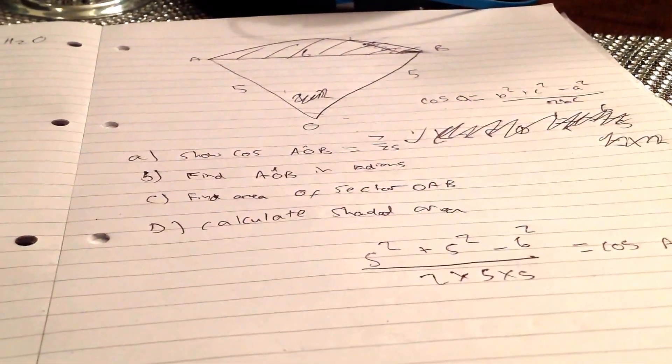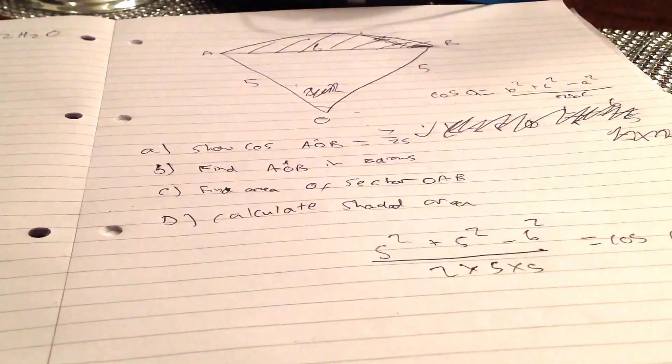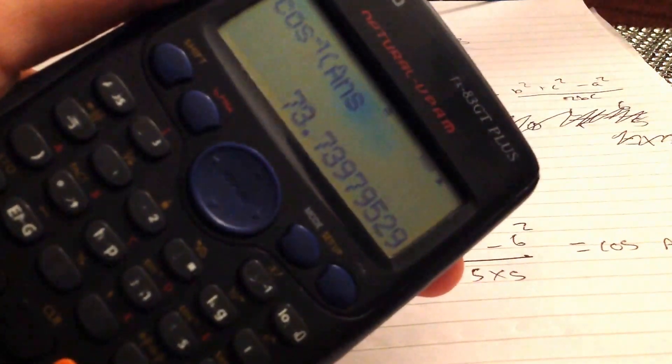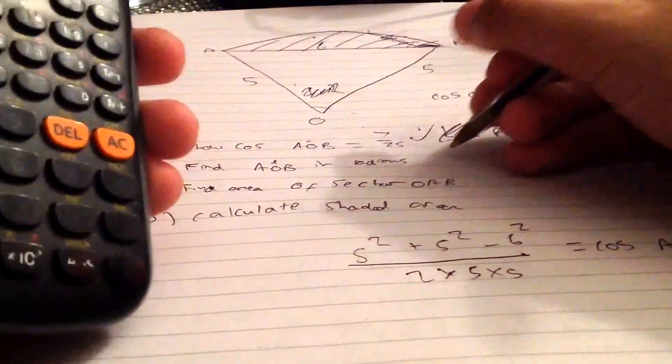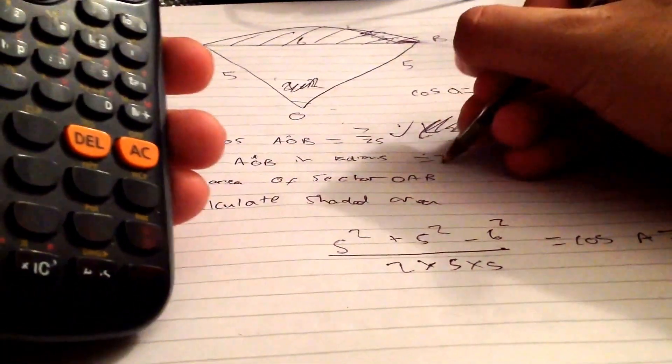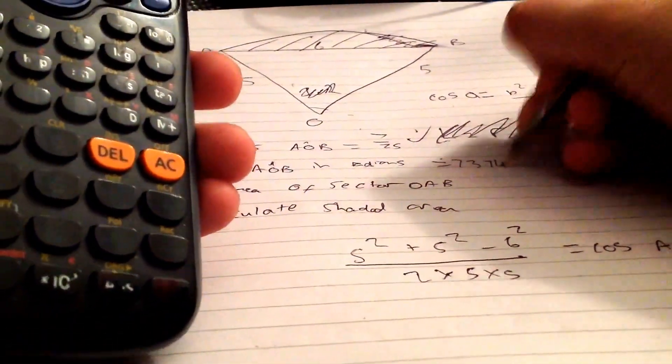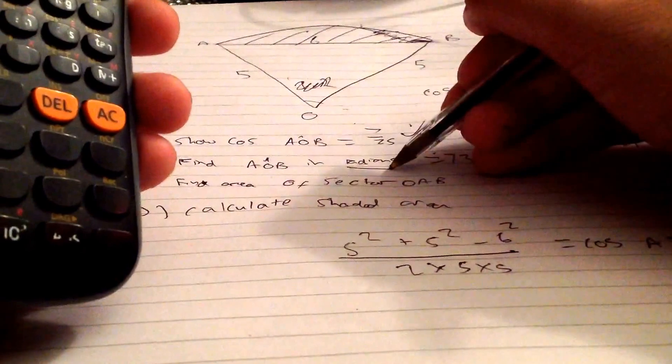Cos to the minus 1 of the answer. And if you can see, 73.74 degrees. But we're not done because we need to find it in radians.